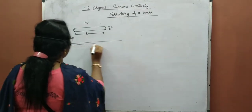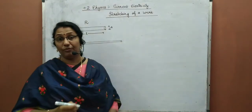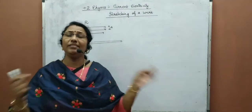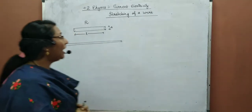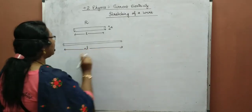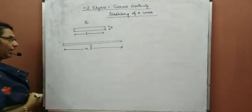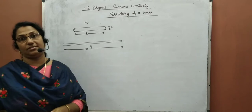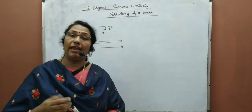When length increases during stretching, area of cross section decreases. We have stretched this wire so that its length now becomes N times the initial length — that is, N·L. The question is: what is the new resistance? What happens to the resistance of a metallic wire when its length is stretched to N times? During stretching, the volume remains constant — no volume change.